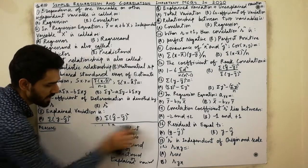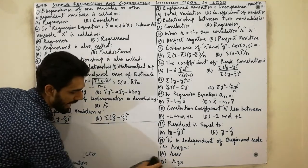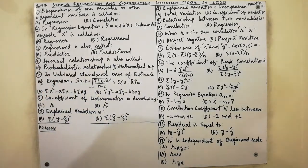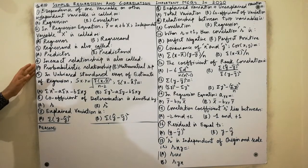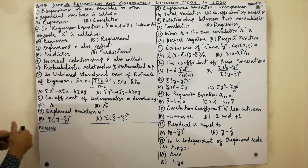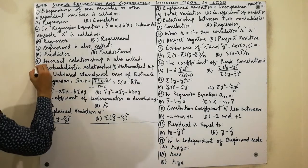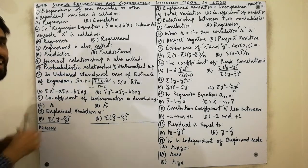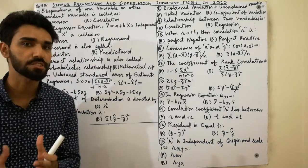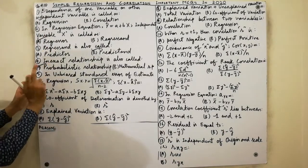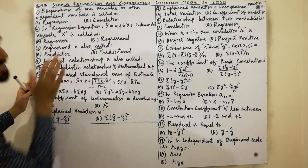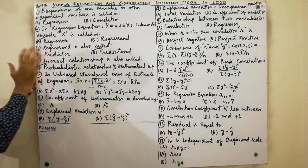Next MCQ: an inexact relationship is also called a probabilistic relationship. Must remember that an inexact relationship is an estimated relationship, also called a probabilistic relationship. This is a very important MCQ.